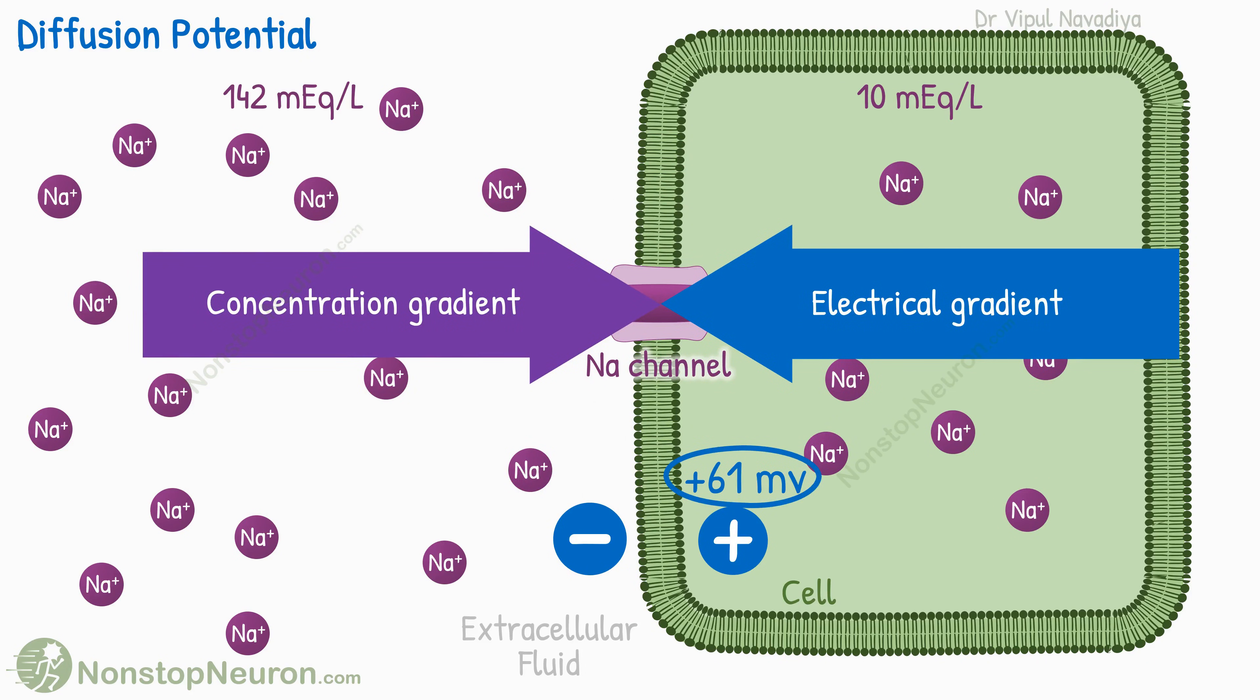The exact value of this potential, where the equilibrium is achieved, depends on two factors: concentration gradient and electrical charge on the ion. The stronger the concentration gradient, the more the potential would be required to oppose the flow. And the more the charge on the ion, the stronger the potential develops by the same number of ions. For example, calcium ions have plus two charge, so it is two times more powerful in balancing the same concentration gradient.